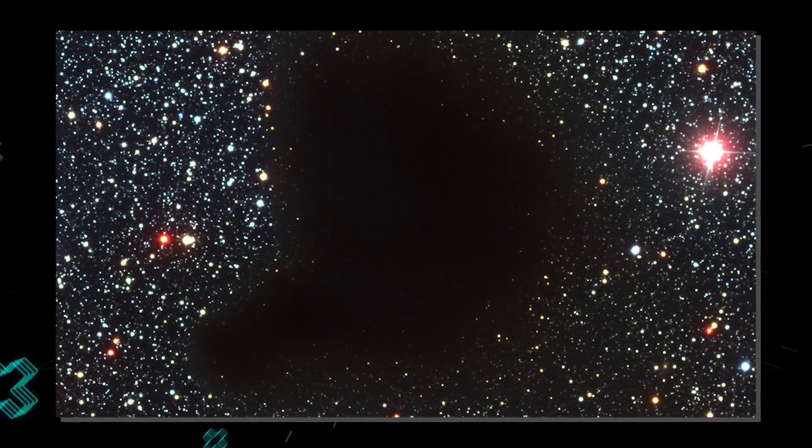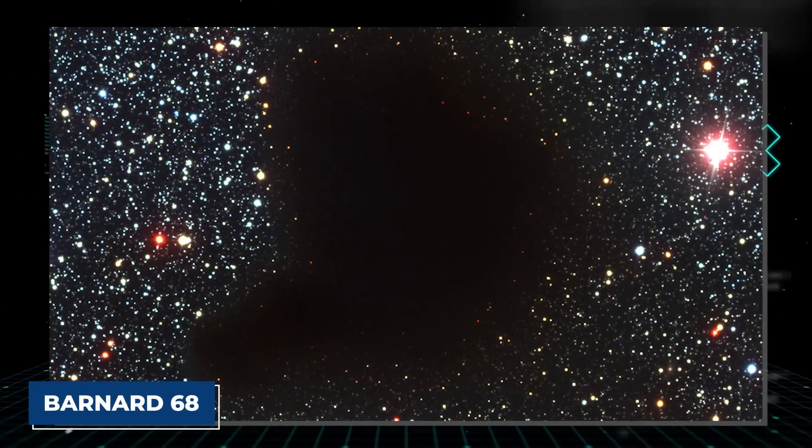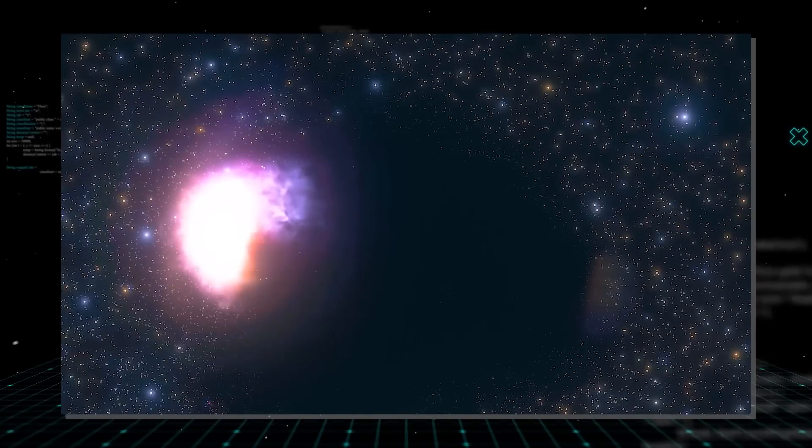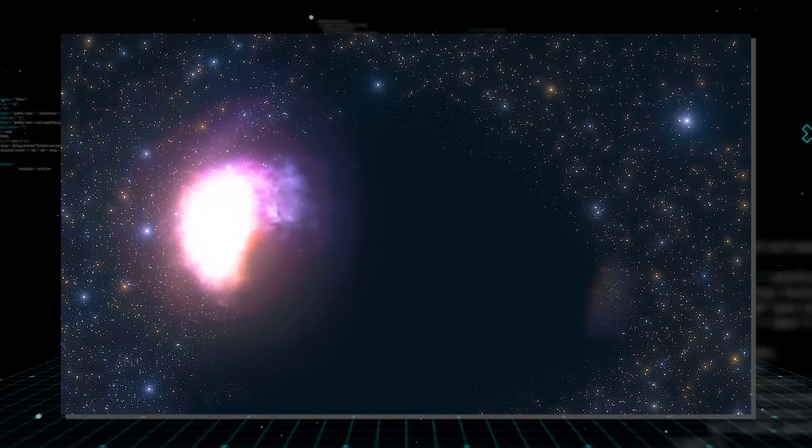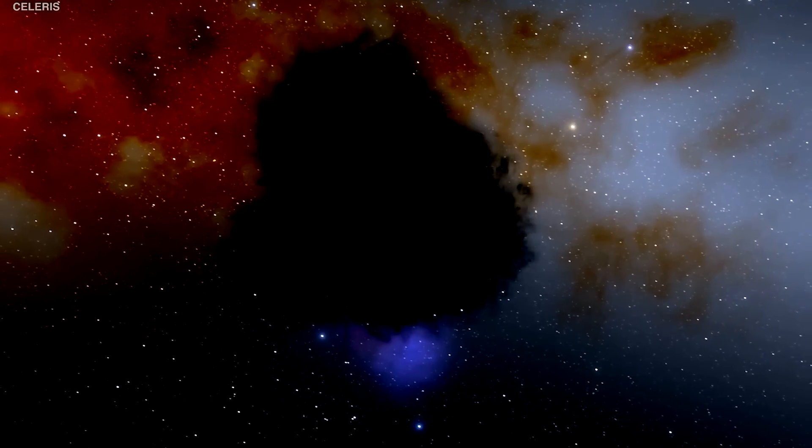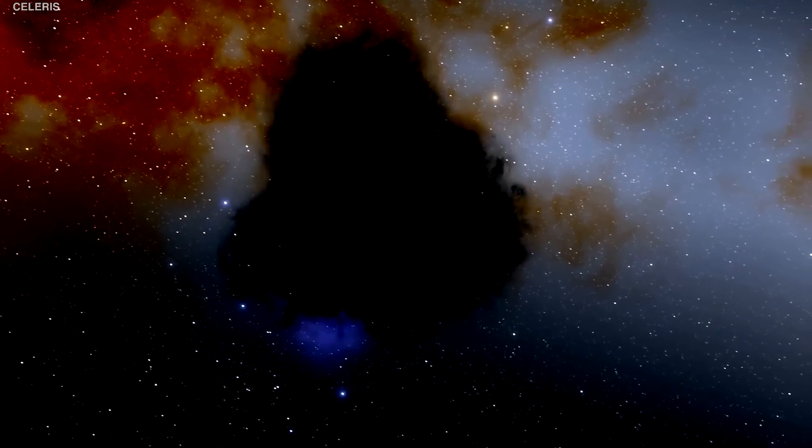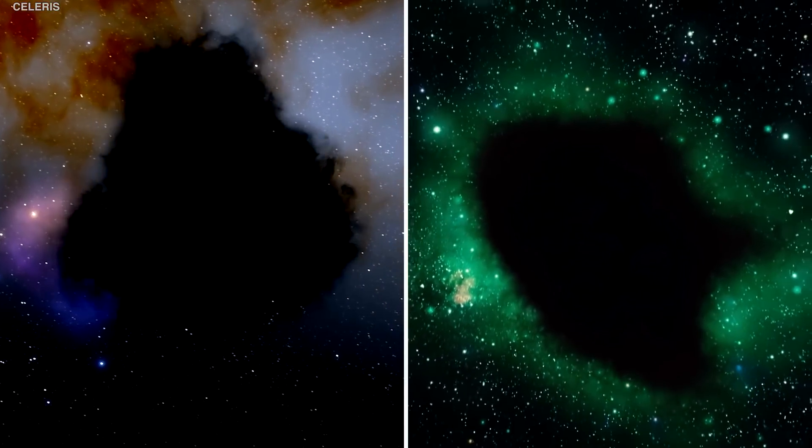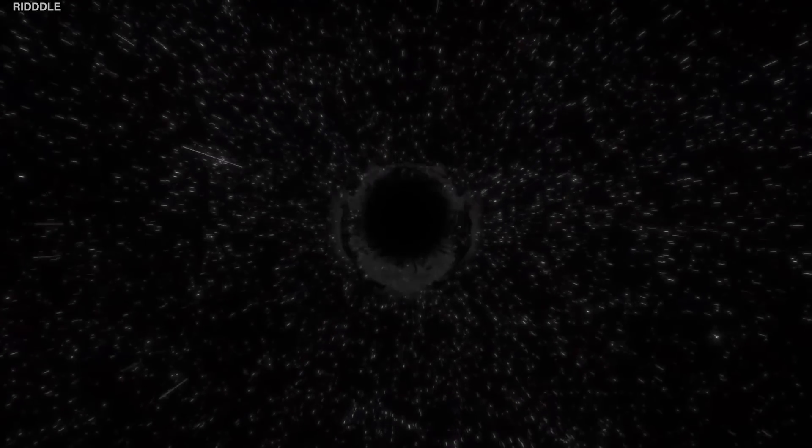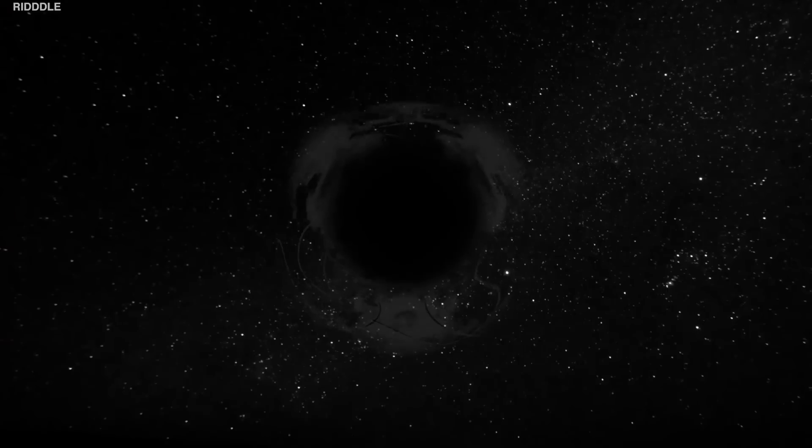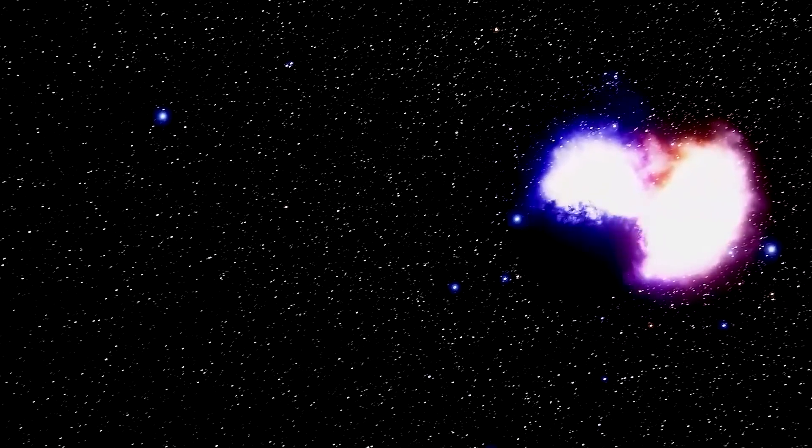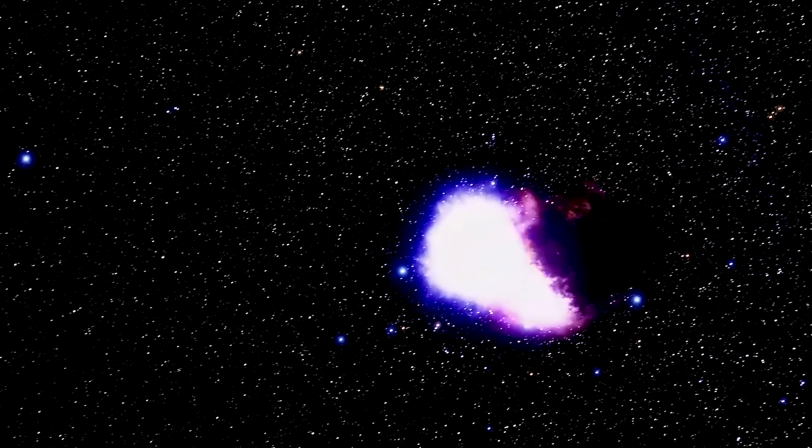The Boötes Void is often associated with images of Barnard 68, a dark nebula that does not allow light to pass through. However, there are differences. The images of Barnard 68 are much darker than those of the Boötes Void, as the nebula is much closer and there are fewer stars in front of it, as well as being a physical mass that blocks light passing through.